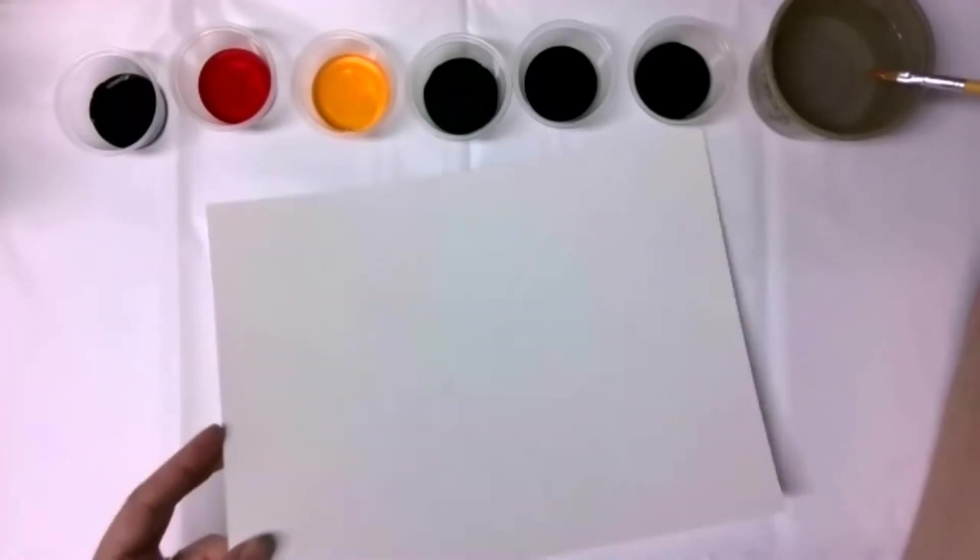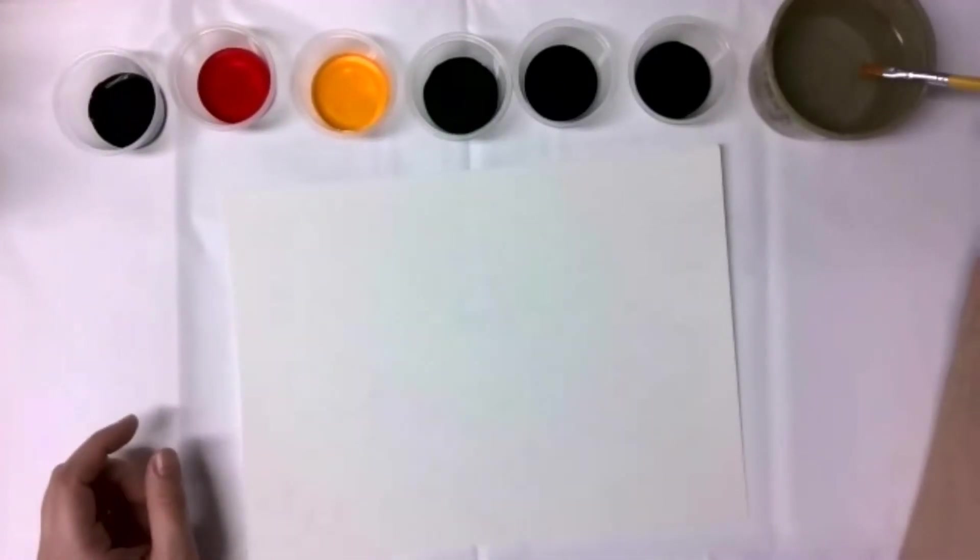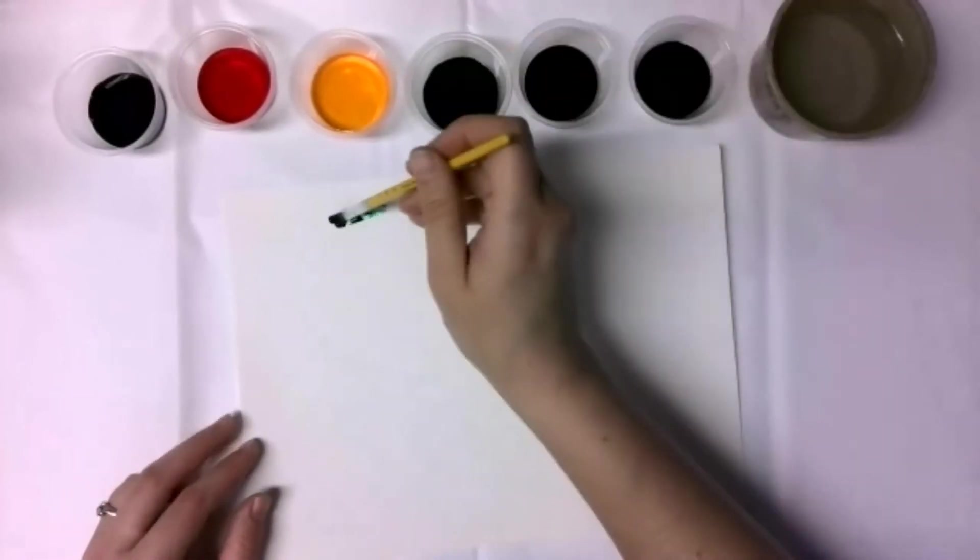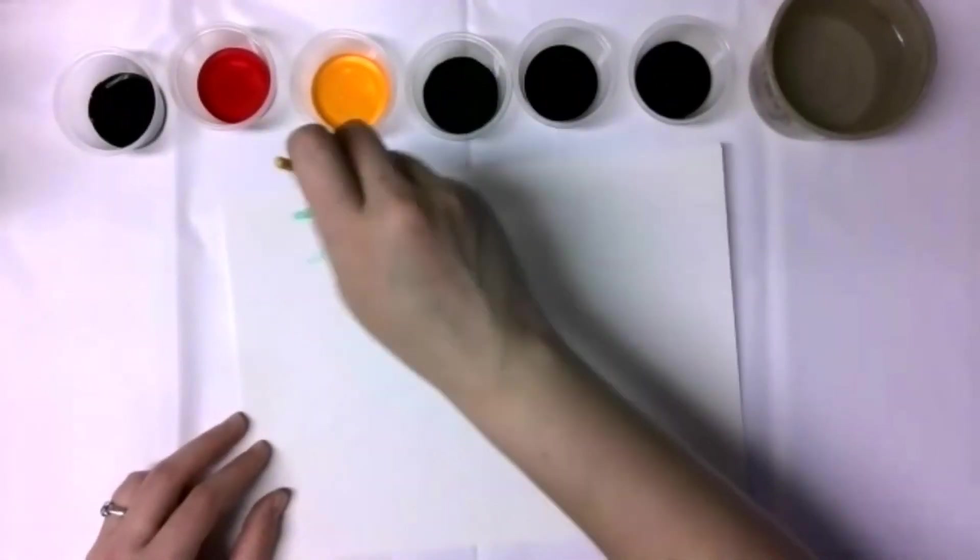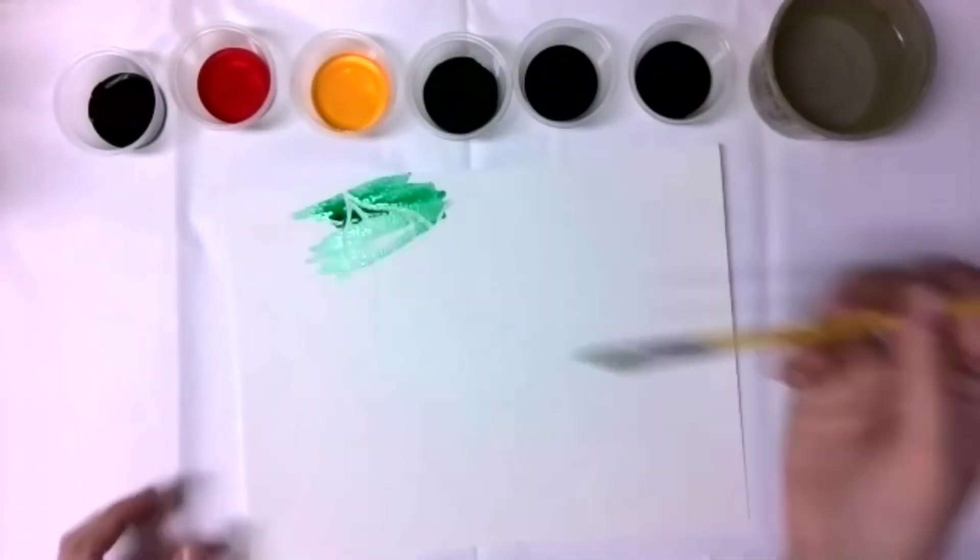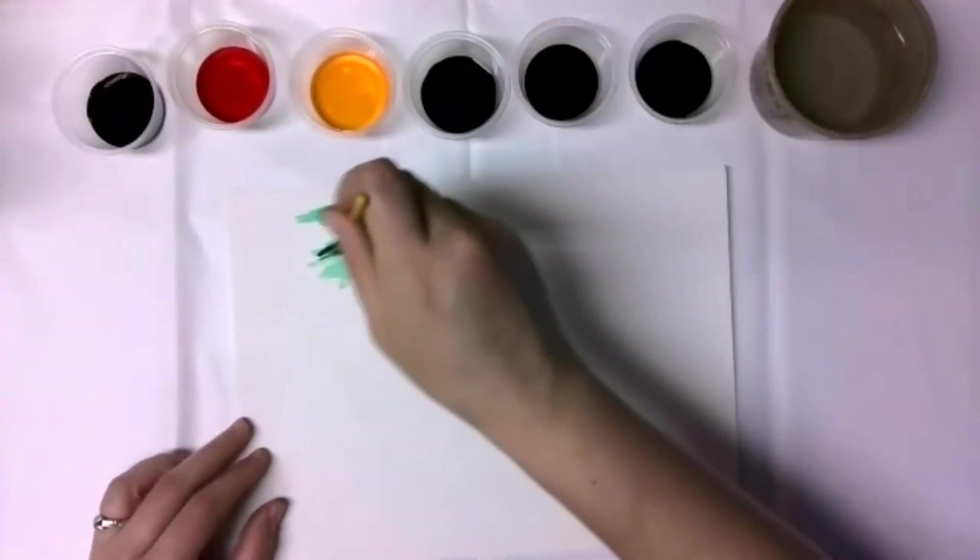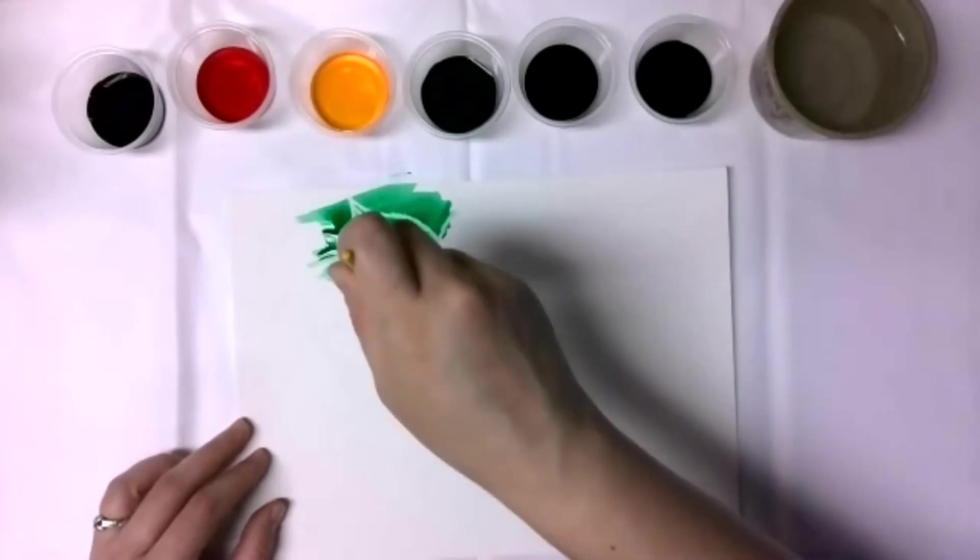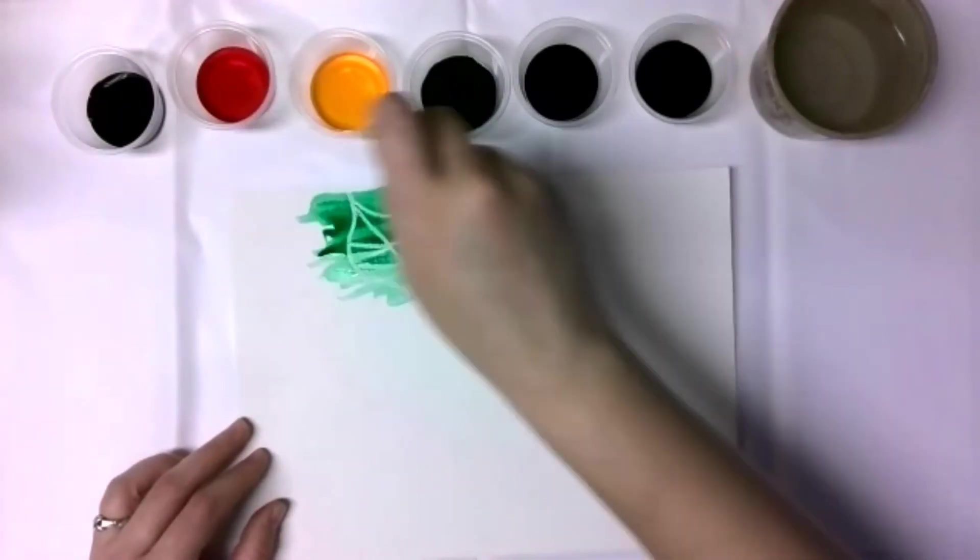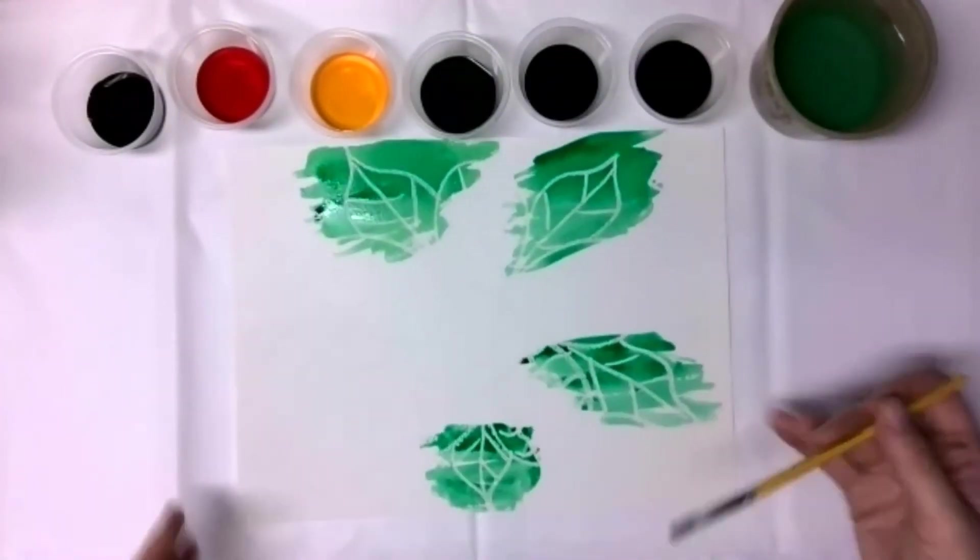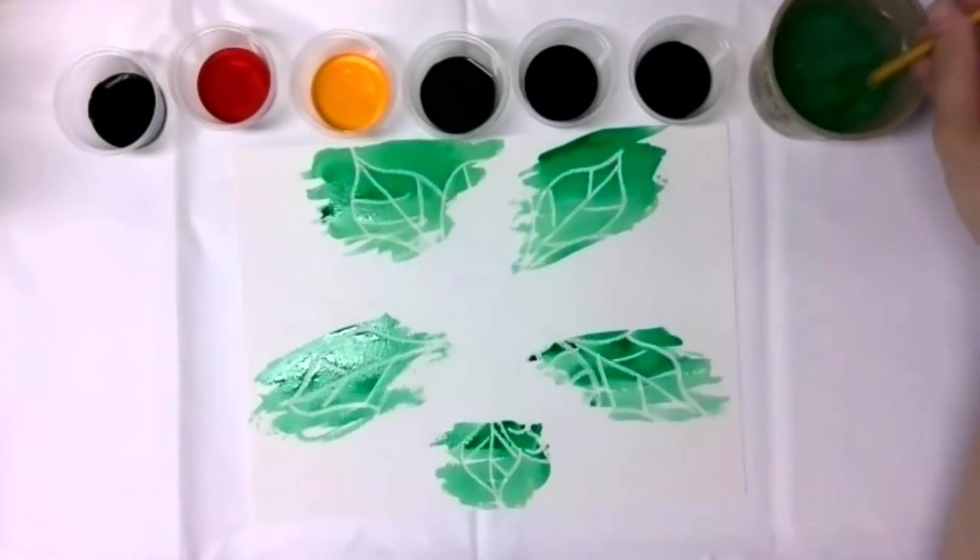So we're going to paint over our leaves with the green. See that? It's very cool. It just comes out on the paper.